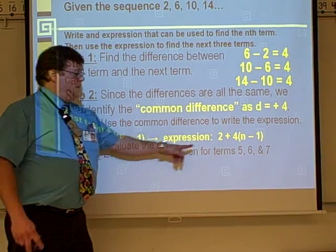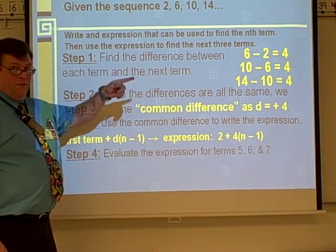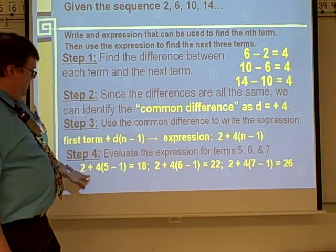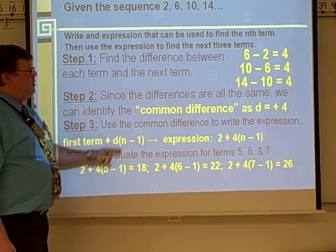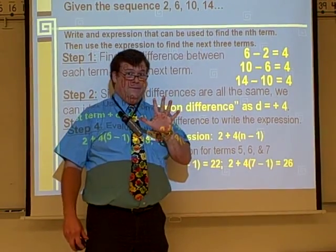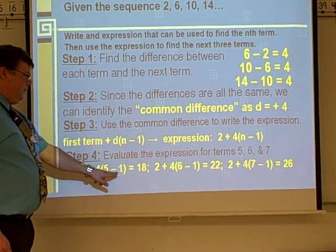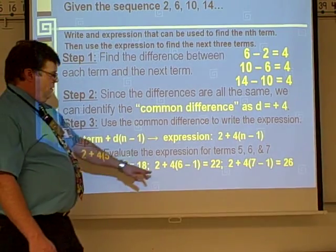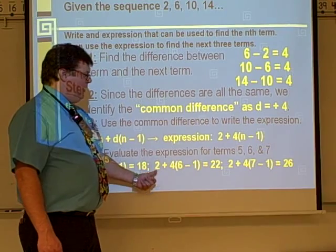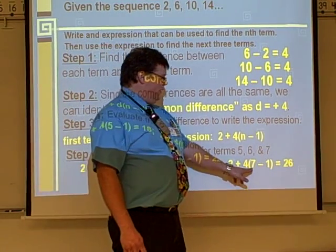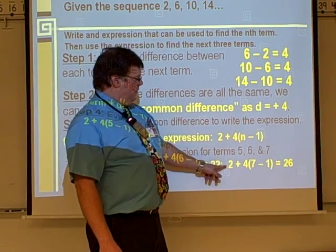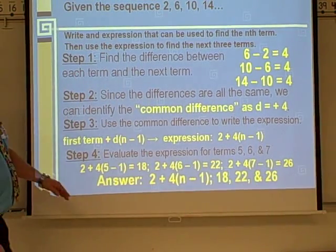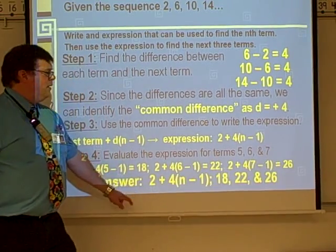We need to evaluate for terms 5, 6, and 7. We want to test to make sure our expression is working correctly. Plug in 5: 5 minus 1 is 4, times 4 is 16, plus 2 gives 18. Plug in 6: 6 minus 1 is 5, times 4 is 20, add 2 gives 22. Plug in 7: 7 minus 1 is 6, times 4 is 24, plus 2 gives 26. So the next three terms are 18, 22, 26. The complete answer is the expression plus those next three terms.